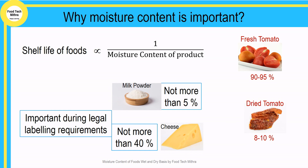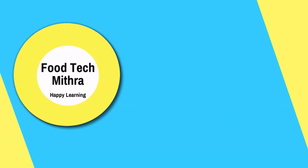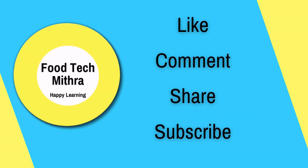When it comes to economic importance, the price of many foods depends on the quantity of water they contain. Water being an inexpensive and readily available ingredient, manufacturers often try to incorporate as much as possible without exceeding legal requirements. Hence it is important for food scientists and manufacturers to be able to reliably measure moisture content.